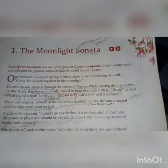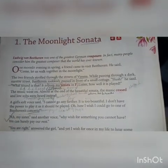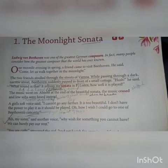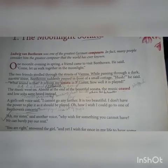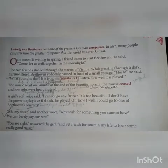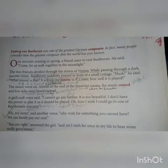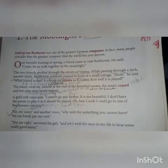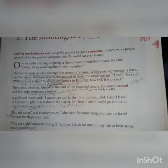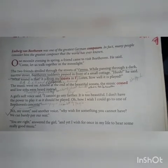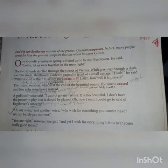Beethoven was moved by pity and inspired to compose his immortal Moonlight Sonata for a poor blind girl. Wandering one evening alone through the streets of Vienna, his attention was attracted by the notes of one of his own compositions, and upon inquiry he found that the player was a poor blind girl.